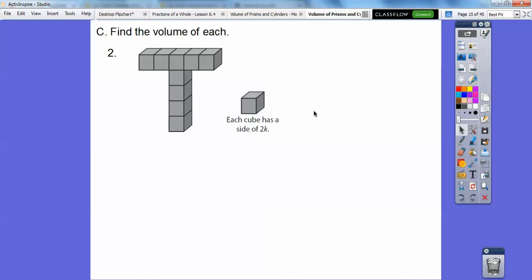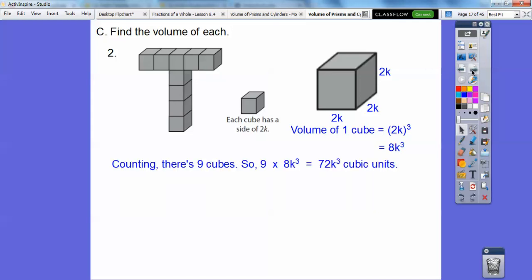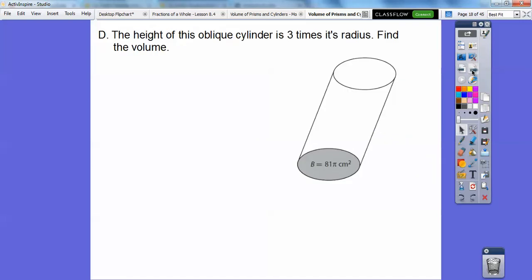So find the volume of this guy right here. Each cube has side of 2k, so we've got to find the volume of one of these, so it's 2k cubed. Remember, a cube is just the side cubed. So 2 cubed is 8, and then k cubed. So each cube is 8k cubed, so there's 5 here plus 4. I count 9 cubes, so we multiply that by 9, and we get 72k cubed cubic units.